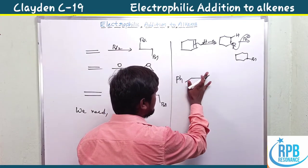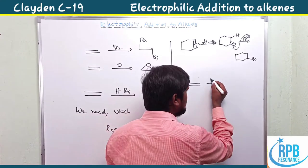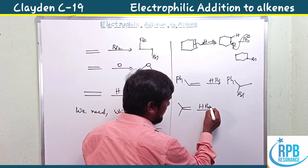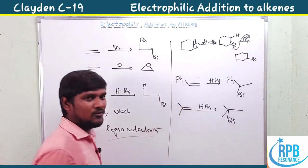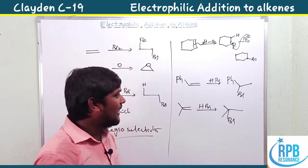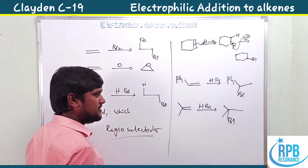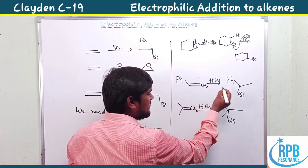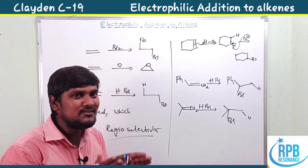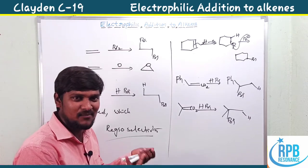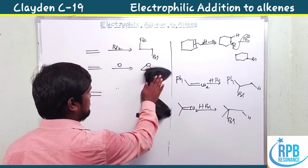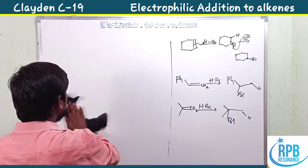For an unsymmetrical alkene — for example, styrene in the presence of HBr — we get a specific product. Similarly for isopropenylbenzene with HBr. We have doubts about why bromine attacks at one position only and hydrogen attacks at the terminal position, where it is CH₂. The regioselectivity guideline here is Markovnikov's rule.